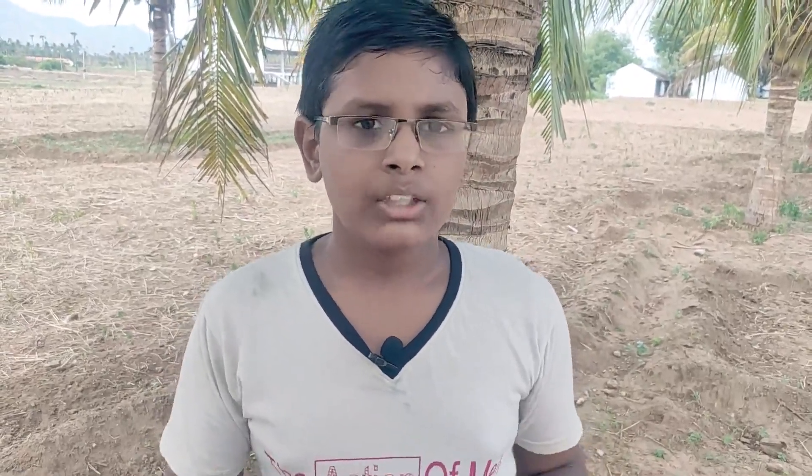Mercury is also a very small planet. There is an atmosphere. Mercury is also known as the night sky.